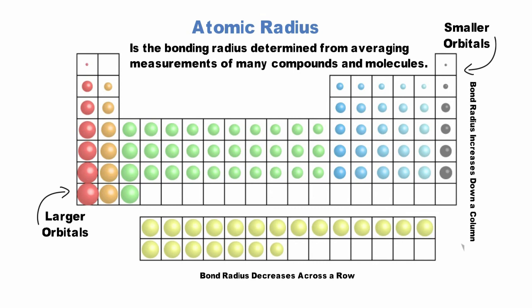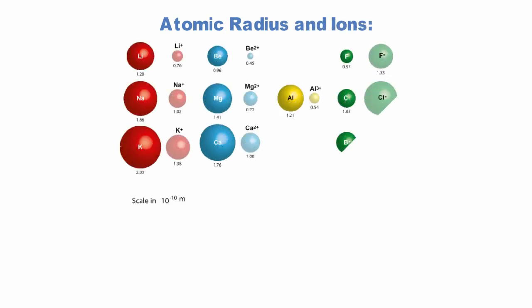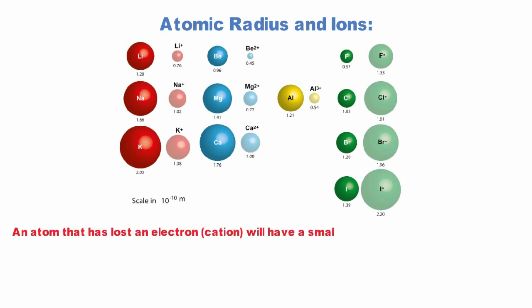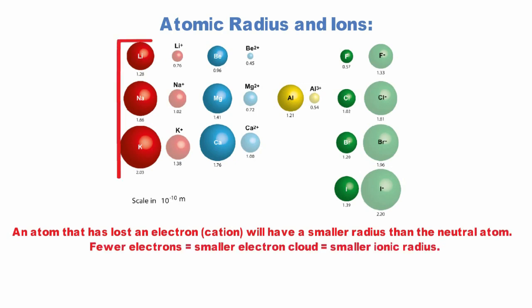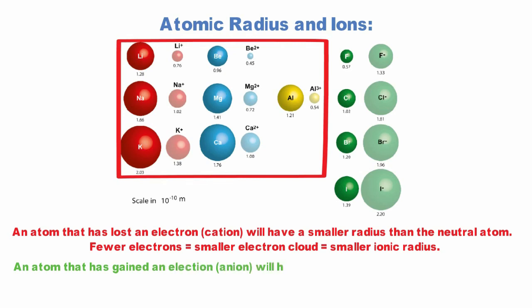The atomic radius of ions changes with the loss or gain of electrons. A cation will have a smaller radius than the neutral atom. Fewer electrons result in a smaller electron cloud and a correspondingly smaller ionic radius. An anion will have a larger radius than the neutral atom. More electrons result in a larger electron cloud and a correspondingly larger ionic radius.